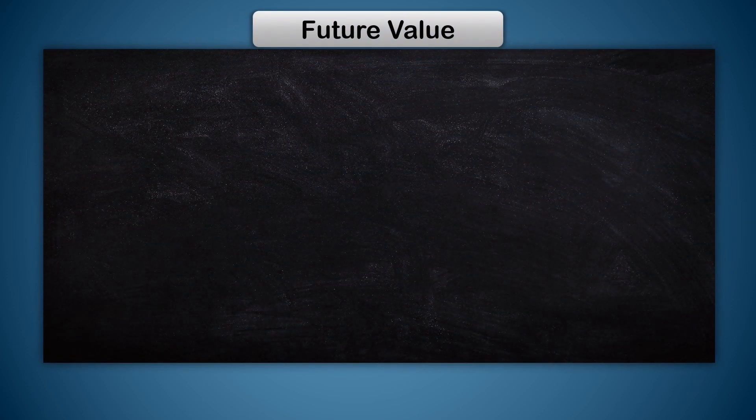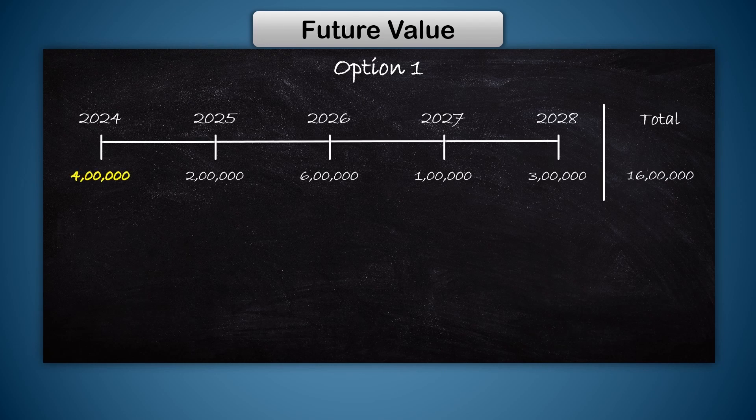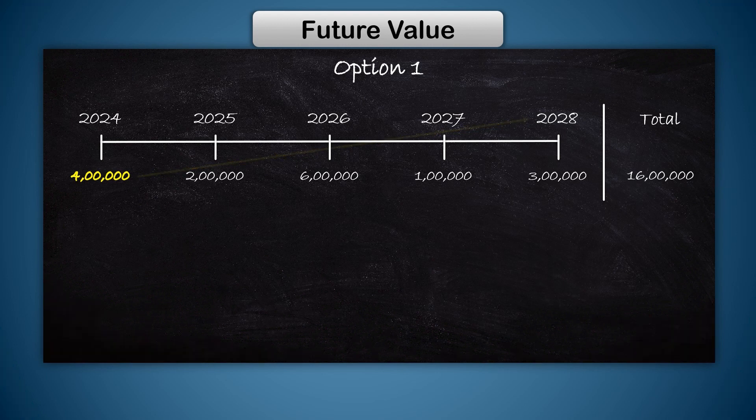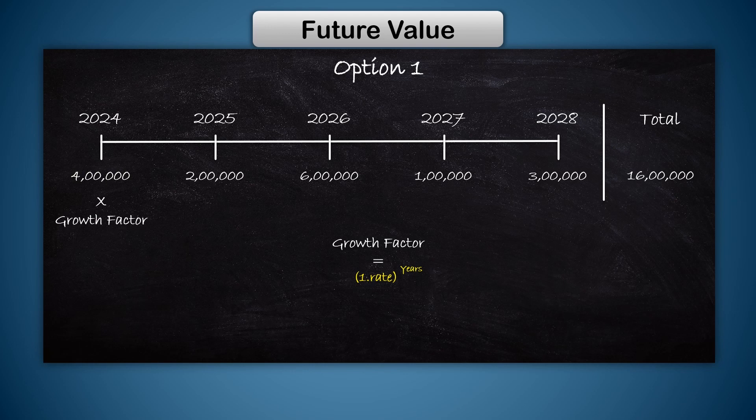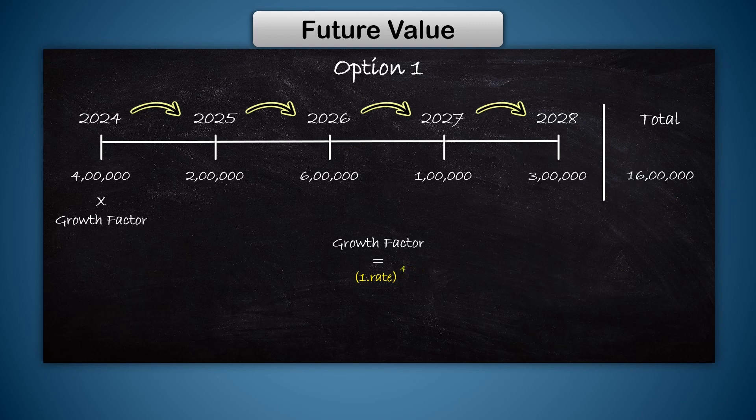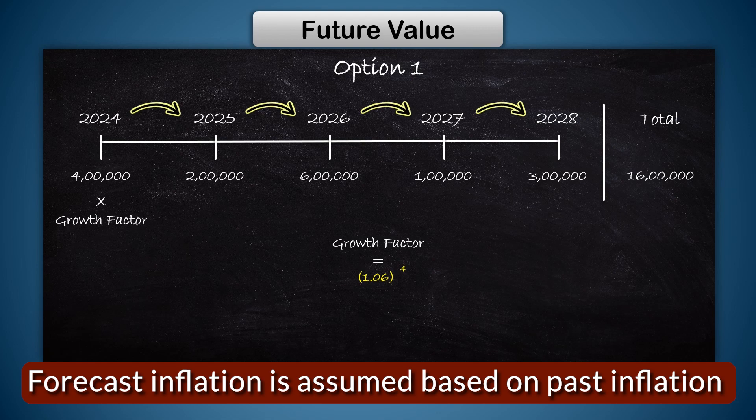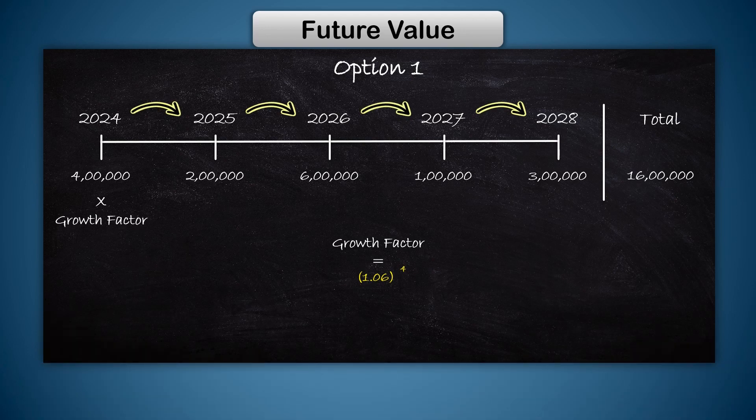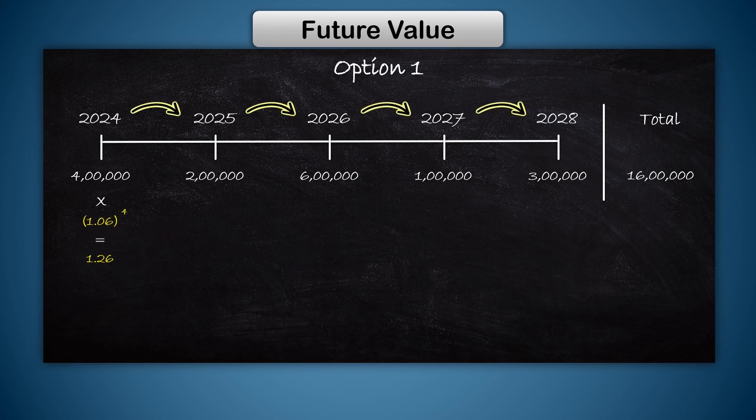Let's evaluate the options using future value approach. We have to multiply with the growth factor, which is 1 + rate to the power years. From 2024 to 2028, there are four years. For the growth rate, we will take 6 percent, which is the expected inflation rate. So this becomes 1.06 to the power 4. The growth factor comes to 1.26. Multiplying this with 4 lakhs gives a future value of 5 lakh 4,991.